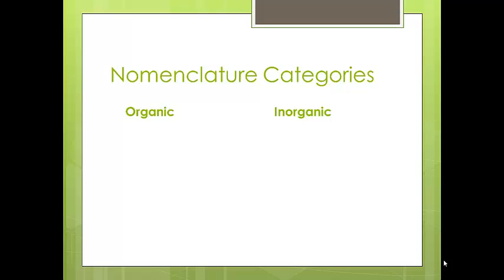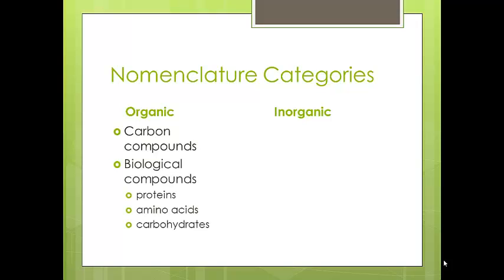Organic materials all contain carbon. Carbon has abilities other atoms do not and therefore can form a tremendous number of compounds, many containing hundreds to thousands of atoms. Many are found in biological systems and are incredibly complex.